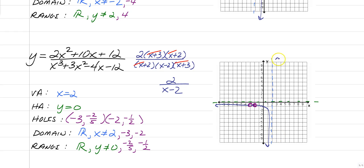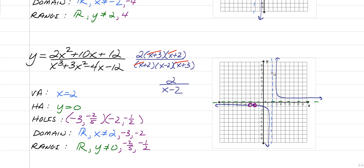There are always a few common mistakes. Number one: your hole must always be on the graph. Never show a hole sitting in the middle of nowhere — if there's nothing there, there's no hole, and that means you calculated it incorrectly. Also, don't ever put a hole on a vertical asymptote or a horizontal asymptote — that point already doesn't exist. Make sure your holes are on the actual graph. That's it for this video on graphing rational functions with holes.